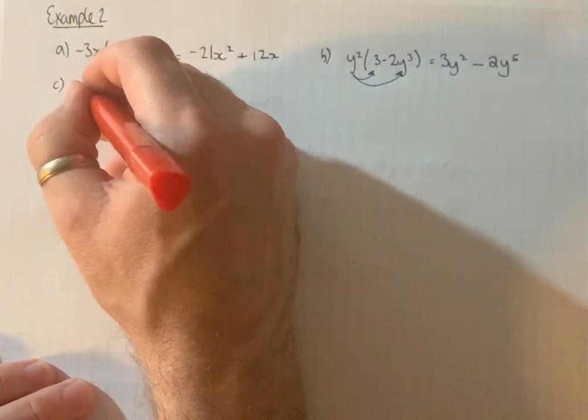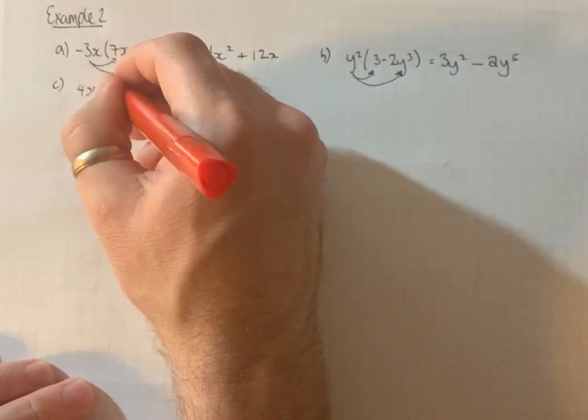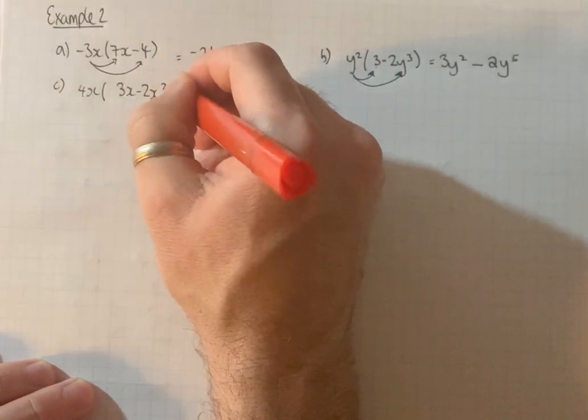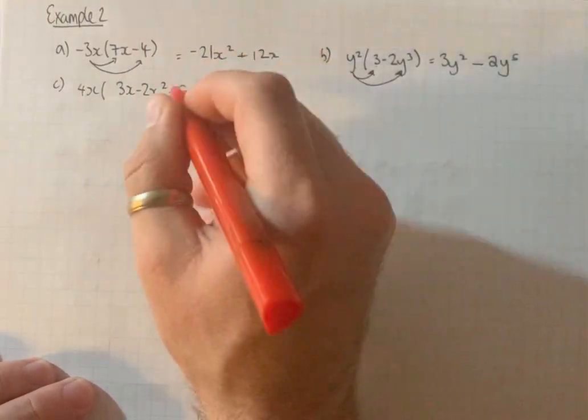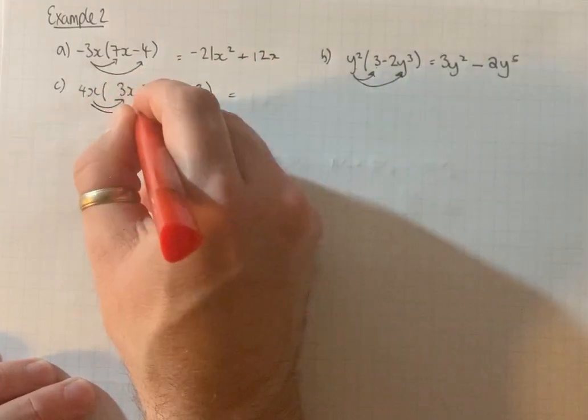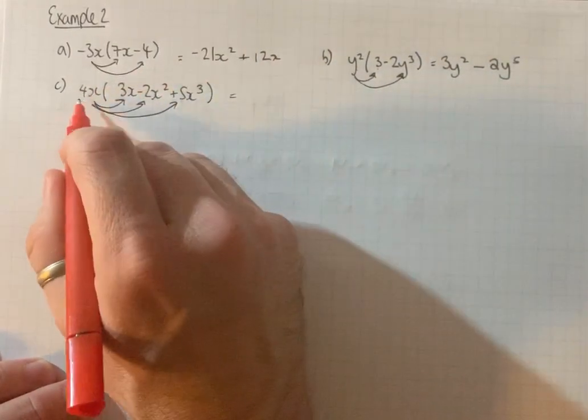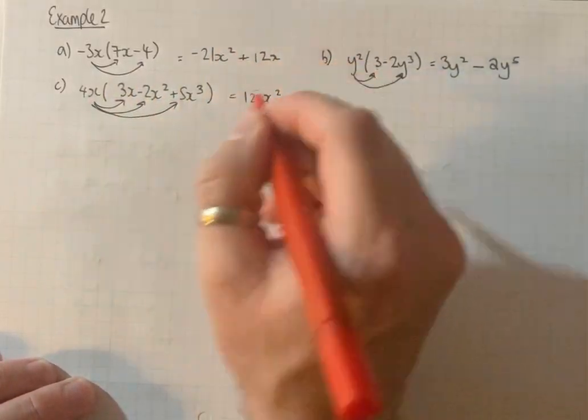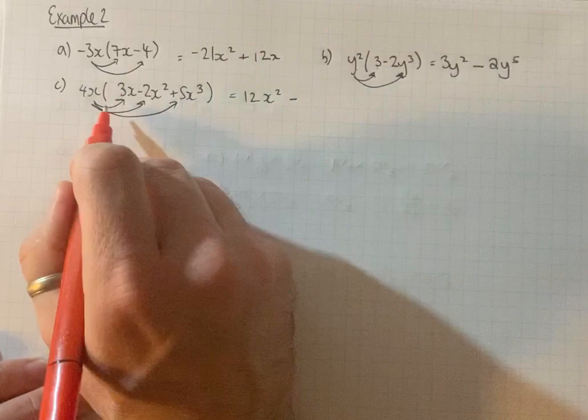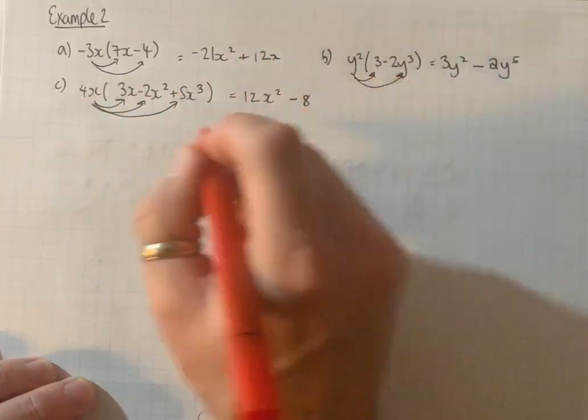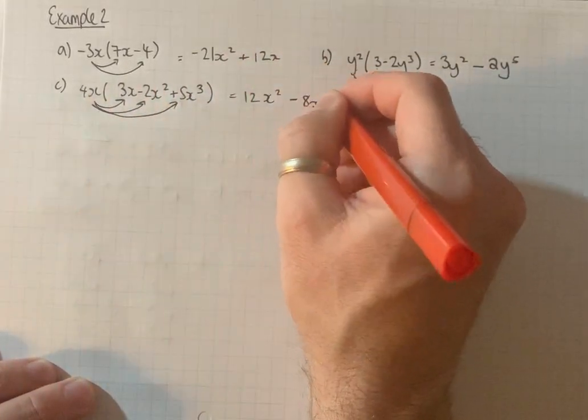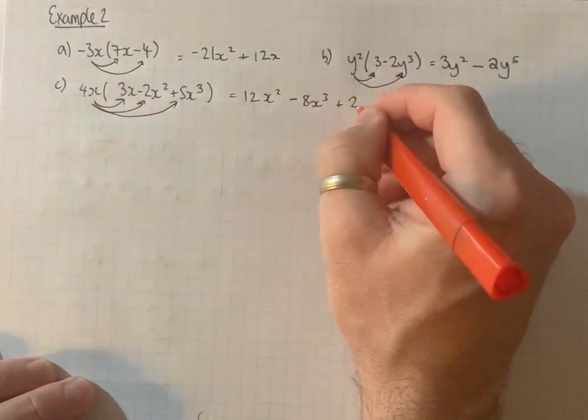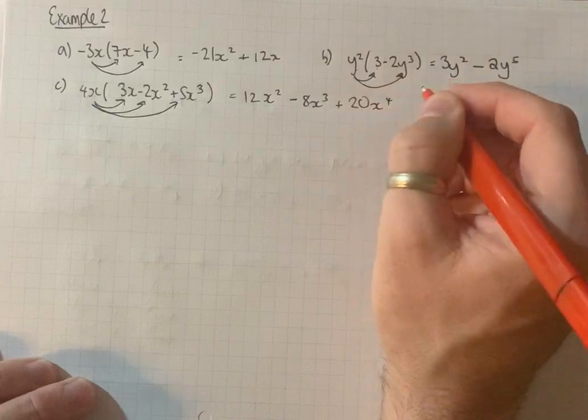4x times 3x minus 2x squared plus 5x cubed. We've got 3 multiplications to do here. So 4 times 3 is 12, x times x is x squared. Minus 4 times 2 is 8, x times x squared is x cubed. Plus 4 times 5 is 20, x times x cubed is x to the 4.